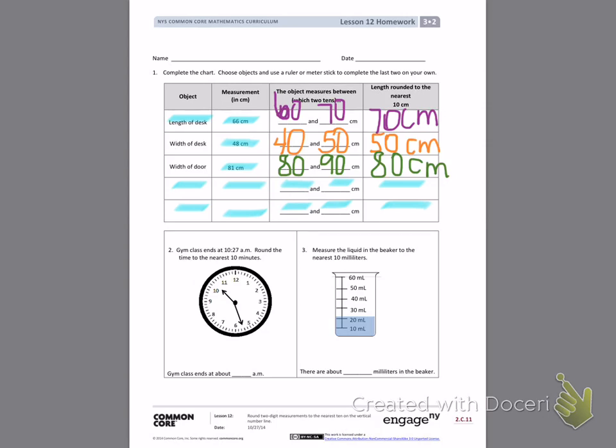Looking at number two. Gym class ends at 10:27 a.m. Round the time to the nearest 10 minutes. I am going to draw a number line over to the side to help me with this. I am going to think about the numbers 27. Those are my minutes.